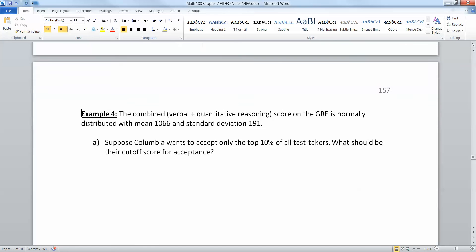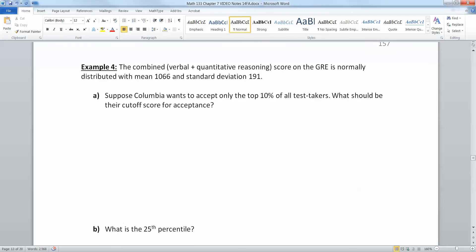All right, so I have the verbal GRE score is normally distributed with a mean of 1066 and a standard deviation of 191. Well, we've seen that before. I want to find Columbia only wants to take the top 10%. What should their cutoff score be? So I'm looking for a score. See it right there? So if you're looking for a score, you're going to need inverse norm.